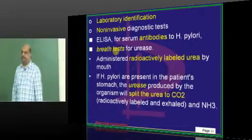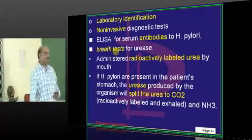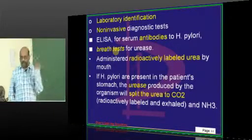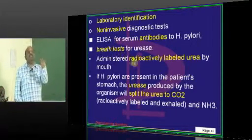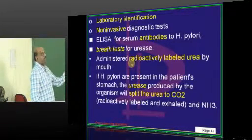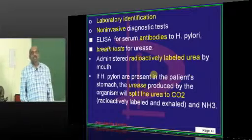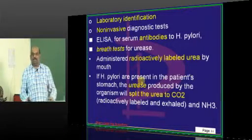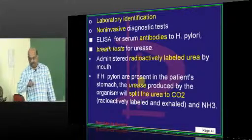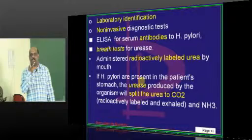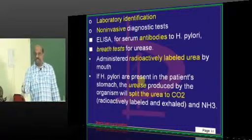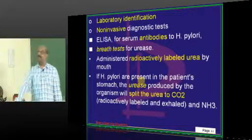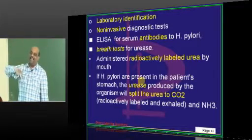For laboratory evaluation, we have non-invasive diagnostic tests. You can do ELISA to detect antibodies against H. pylori. You can also do a urea breath test: give radioactive labeled urea by mouth — if H. pylori is present, its urease will break down the urea, and the radiolabeled carbon dioxide will be breathed out through the stomach, up through the esophagus, nasopharynx, and exhaled, where it can be detected.